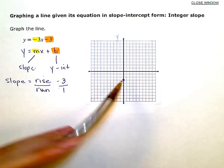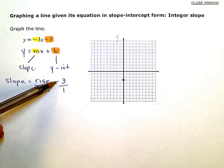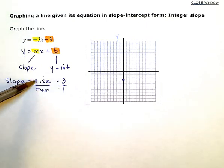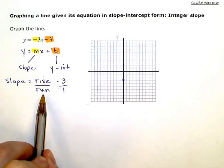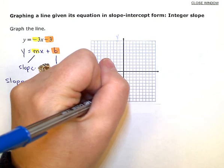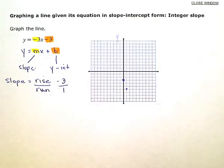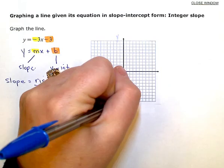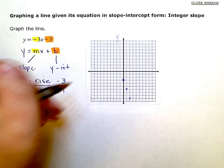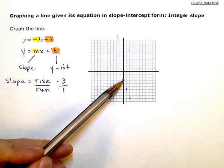So that means from this point, I'm going to go down 3 in the up and down direction, and over 1 to the right in the horizontal direction. So down 3 over 1 would put another point right there. And I can do this a few more times, down 3 over 1 to give myself several points.